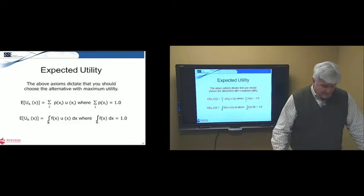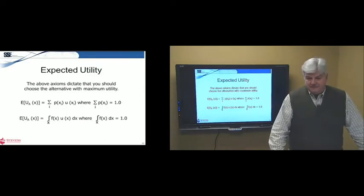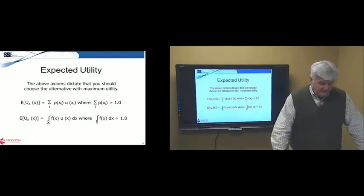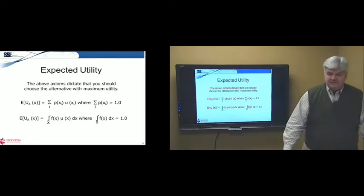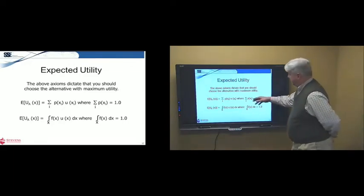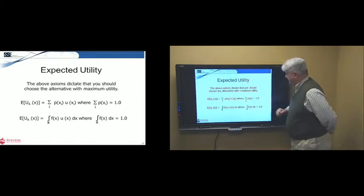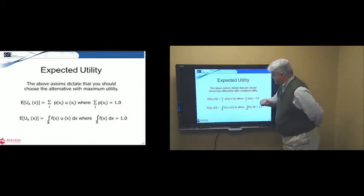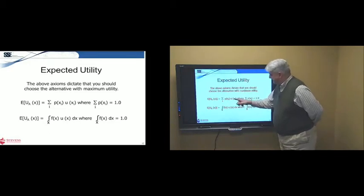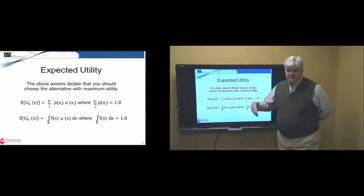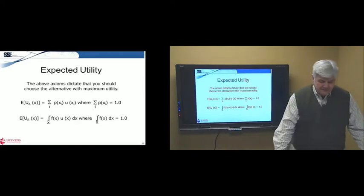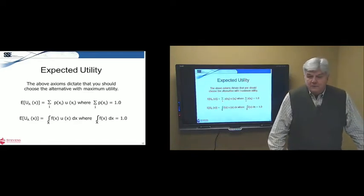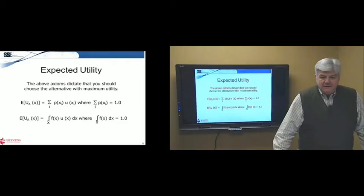But nevertheless, the basic notion, if you agree with those five axioms, then that dictates you should choose the alternative with the maximum expected utility. You see our whole notion of expected value is the same as we've talked about a few minutes ago, but now it's expected utility as opposed to expected value because we're not using the X's. If the U wasn't there, we'd have the expected value of X, but we're talking about the expected utility of X. So, the point is, if you agree with those five axioms and you'd like to make your decisions that way, then you should choose the alternative with the maximum expected utility.